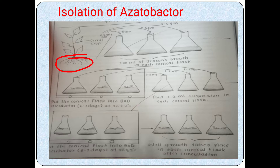We have to collect 0.5 gram or 1 gram of soil sample from the rhizospheric zone of a cereal crop. Then transfer that 0.5 to 1 gram of soil into three conical flasks, each containing 100 ml of Jensen broth. Jensen broth is the media on which the growth of Azotobacter takes place.